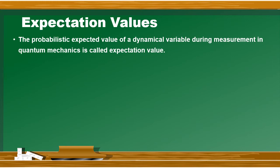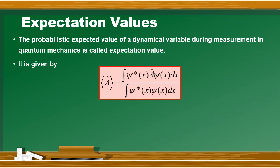Expectation value कैसे find की जा सकती है? Quantum mechanics के अंदर इसको find करने के लिए एक mathematical relation यूज करते हैं। अगर operator A है तो operator A की expectation value — angle brackets के अंदर — that will be equal to integral ψ* A ψ dx divided by integral ψ* ψ dx. कुछ books में denominator नहीं होगा, यानी denominator equal to 1 होगा। यह वो case होगा जब wave function normalized होगी — normalized wave function के case में integral ψ* ψ = 1। तो expectation value simply बन जाएगी integral ψ* A ψ dx۔